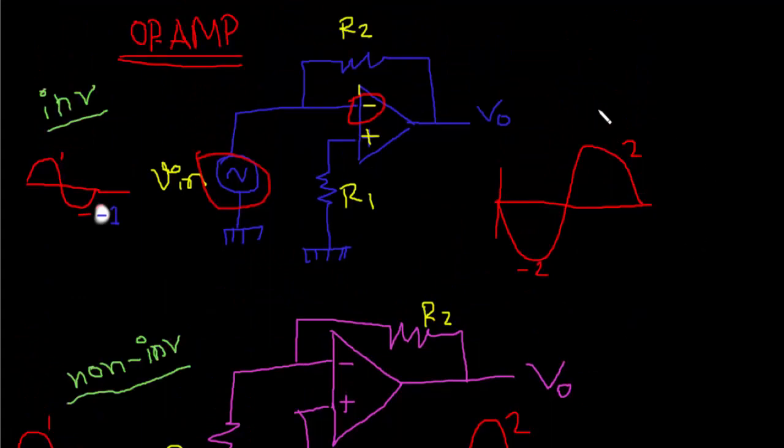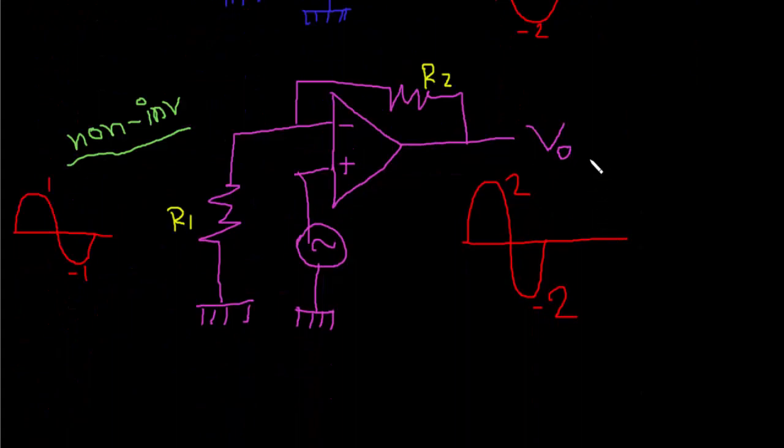Another important thing: the transfer function or voltage gain of the inverting op-amp is A equals V output by V input equals minus R2 by R1. And the voltage gain of non-inverting op-amp is A equals V out by V in.